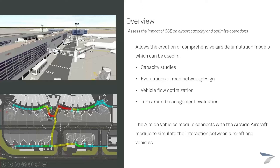With this module you can also evaluate your road network design and optimize your vehicle flow in Airtop. As you can see in this diagram in the bottom left, this is a representation of where my aircraft are stopping. This can help you evaluate your road network design and see if any changes would have an impact on aircraft delay.